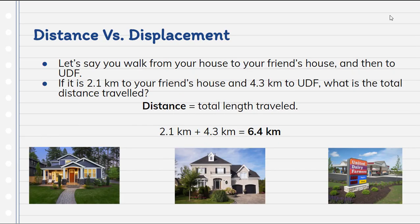I want to talk about two key vocabulary terms. The first is distance. Let's say you walk from your house to your friend's house and then to UDF — the pride and joy of southeastern Indiana and southwestern Ohio. If it's 2.1 kilometers to your friend's house and 4.3 kilometers to UDF, the total distance traveled is 2.1 plus 4.3, which yields 6.4 kilometers. Please make sure you include your units. Distance is the total length traveled.